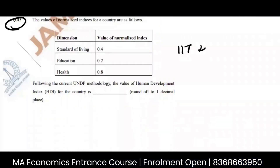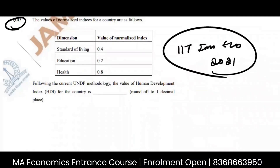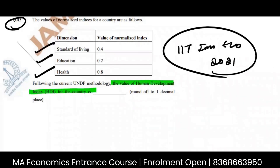This is Question 43 of IIT JAM Economics 2021. The question gives you standard of living, education, and health, and asks you to find the value of HDI.